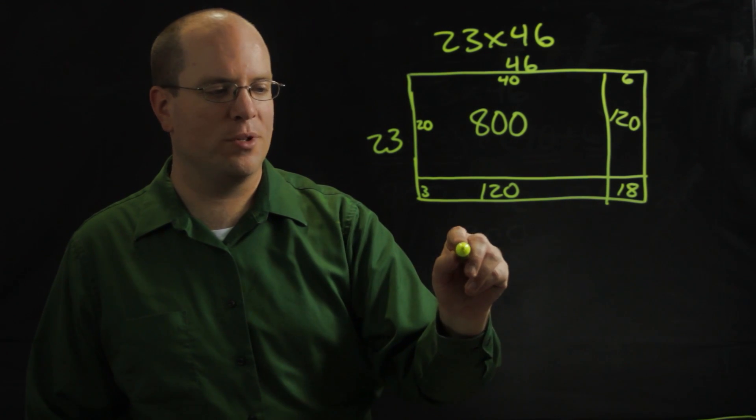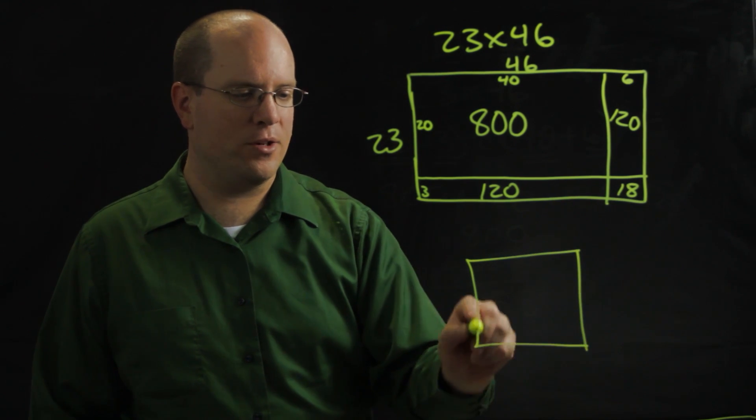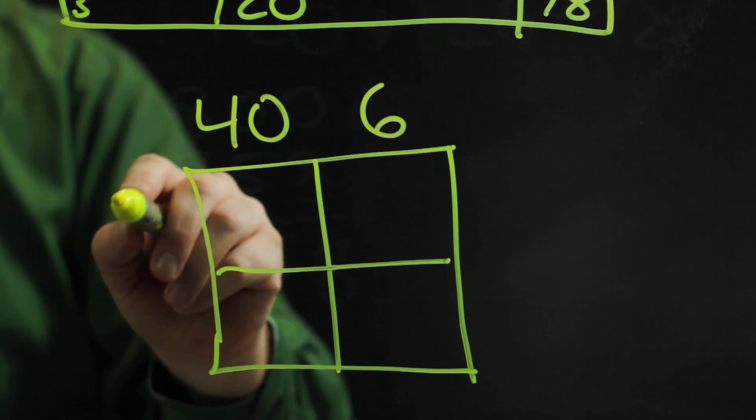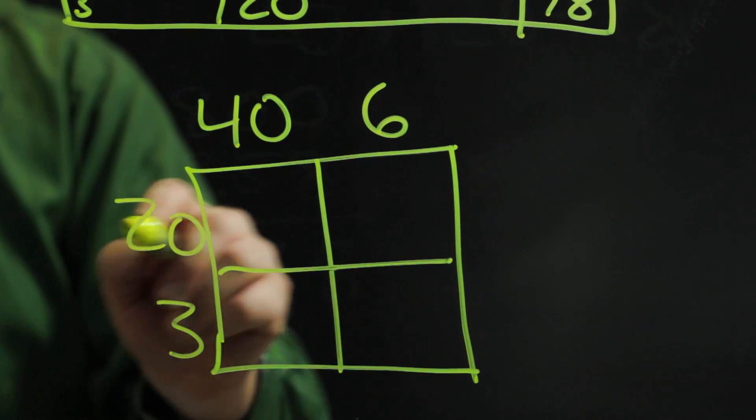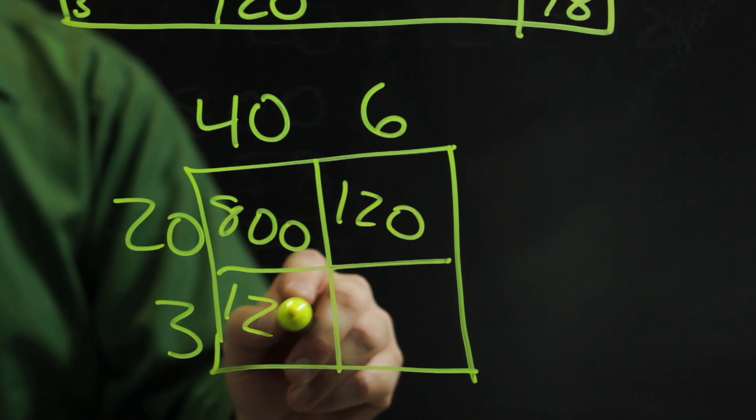And then I'll even have students that will take this even further and just draw their box like this and go 46 and 23 and multiply it the exact same way. So this way they don't have to draw it to scale.